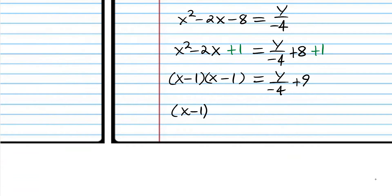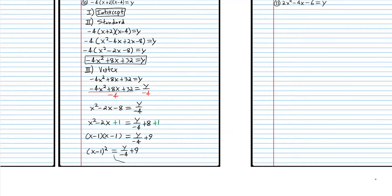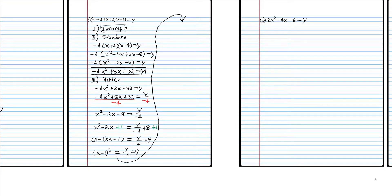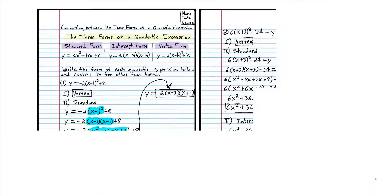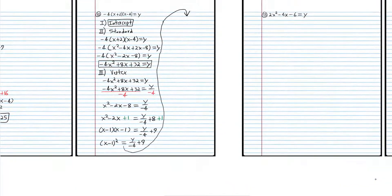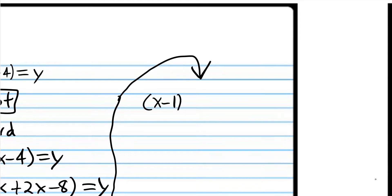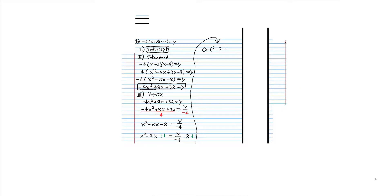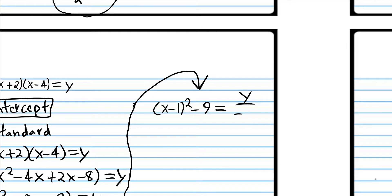We're going to factor it. What two numbers multiply to 1 and add up to negative 2? That's just negative 1 and negative 1. And 8 plus 1 is 9. Now we can write the product of binomials as a power expression. We're out of room, so we'll go up here. The only thing remaining is to isolate y — in vertex form, as in all these forms, y is isolated. We've put all the numbers next to y, and now we have to get them away from y.